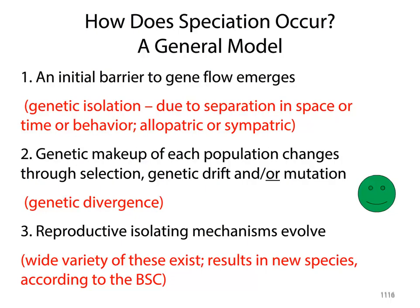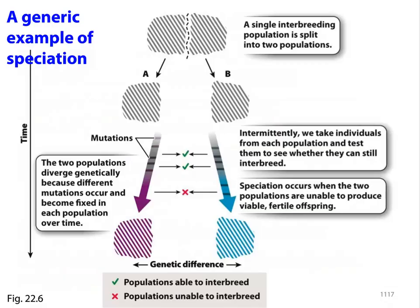Write this down: genetic isolation is due to separation in space or time, and genetic divergence is step two. Reproductive isolating mechanisms — there's a wide variety — according to the BSC, this is what will result in new species. A nice generic example: you have a single interbreeding population that gets split into two, the two populations diverge genetically with different mutations, some become fixed in the populations over time. Eventually, this leads to speciation because even if they were to come back together, they'd no longer be able to produce fertile offspring.